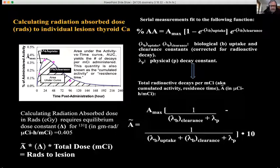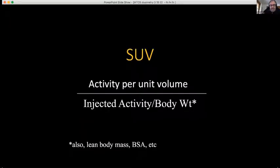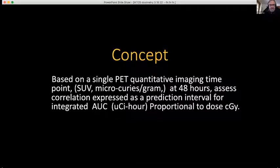Once you get the A-tilde — the activity integrated over time — you multiply by delta, the equilibrium dose constant, times the total millicuries administered to get the estimated rads to lesion. SUV is a quantitative parameter corrected for injected activity and body weight, and it's proportional to the concentration in microcuries per gram in the tumor. We used a single PET quantitative imaging time point at 48 hours to assess the correlation with the integrated AUC proportional to dose in centigray. The initial 21 patients had 208 lesions, all with advanced well-differentiated thyroid cancer referred for RAI dosimetry.